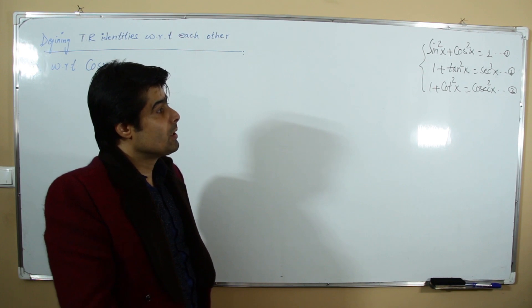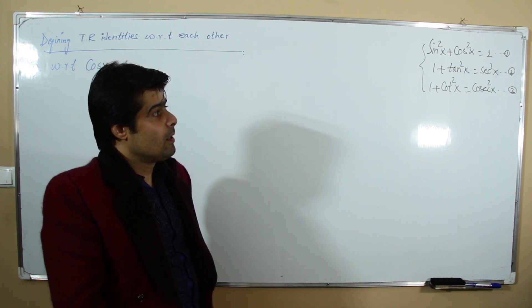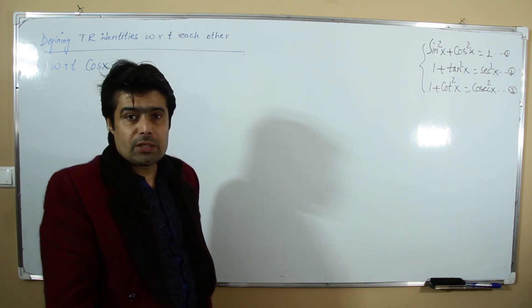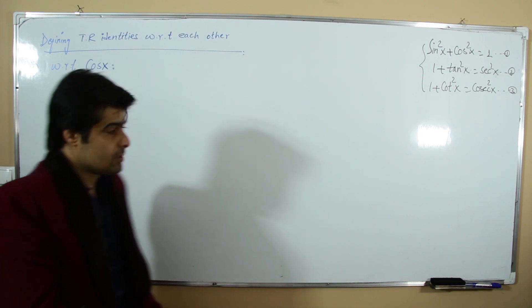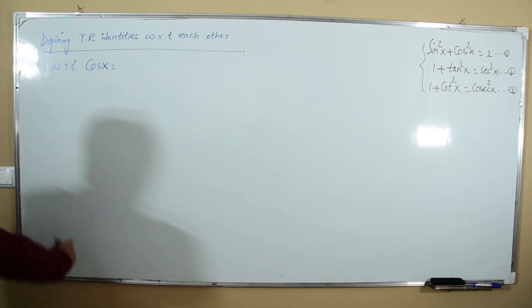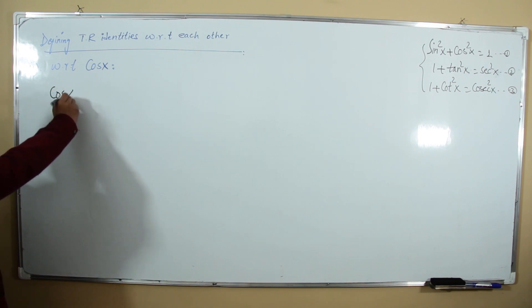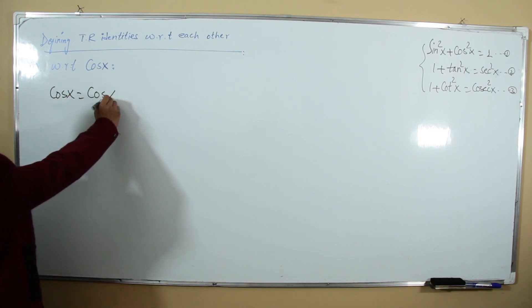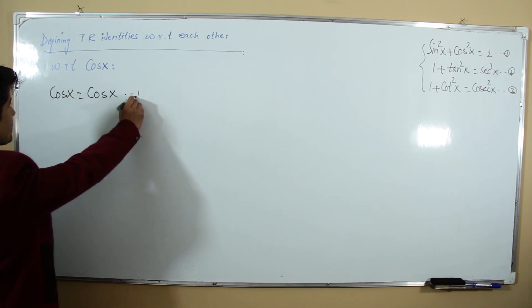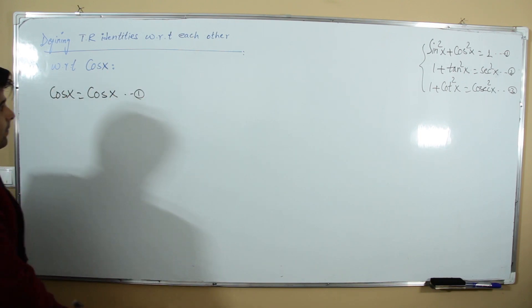Use the trigonometric identities. Cosine with respect to cosine is cosine. This is our first relation.